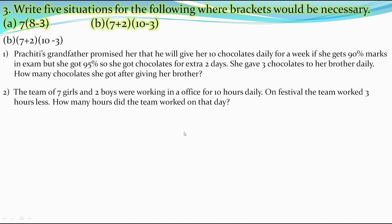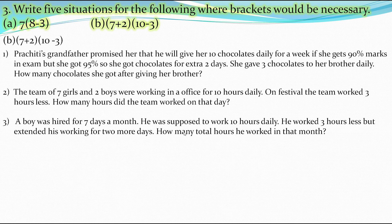The third situation: a boy was hired for 7 days a month and was supposed to work 10 hours daily but worked 3 hours less, so we subtract 3 from 10. Additionally, he worked for 2 more days, so days increase by 2 giving 7 plus 2. How many total hours did he work in that month? We enclose both expressions in brackets and multiply the answers.